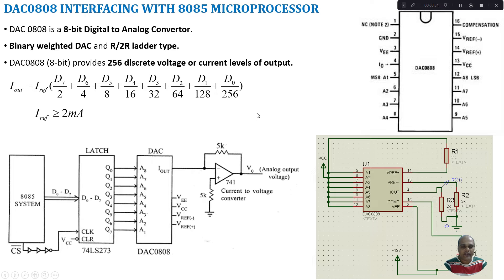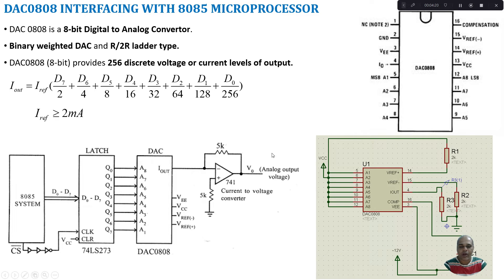Now let us see how to interface this DAC with the 8085 microprocessor. There are two ways. The first way is to connect the 8085 to an 8-bit latch — a 74LS273. Data from the CPU data lines D0 to D7 goes into this latch, and from the latch we get outputs Q0 to Q7, which are given as input to the DAC. Depending upon the binary data, the output current Iout is generated, and this current is converted into a voltage using a simple op-amp current-to-voltage converter circuit.